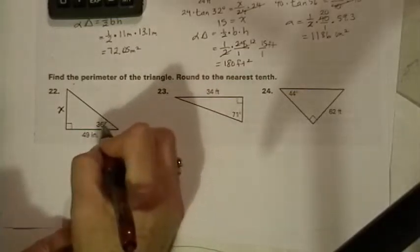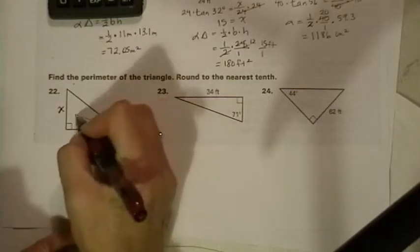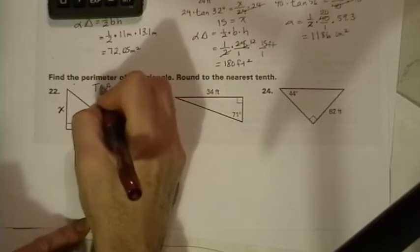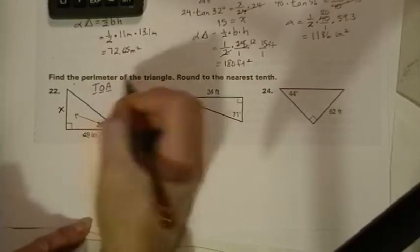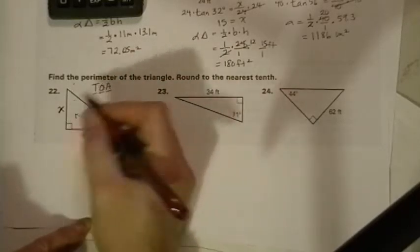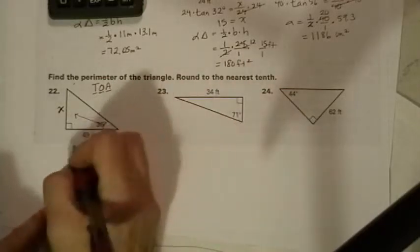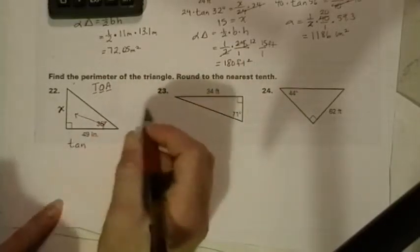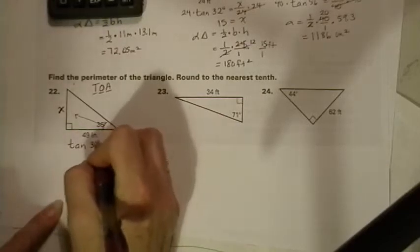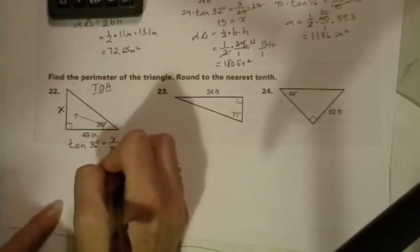And we're going to say if I were to go and use the tangent ratio that's TOA. Tangent is opposite over adjacent. I'm going to have my X on top which is where I want it. So I'm going to put down tangent of 36 degrees equals X over 49.